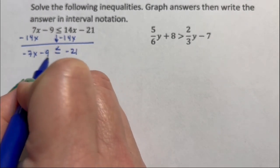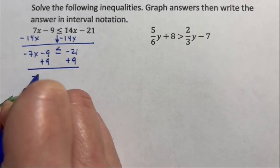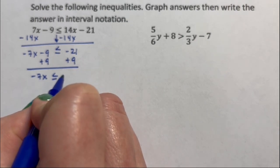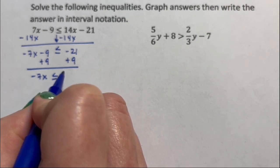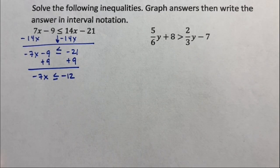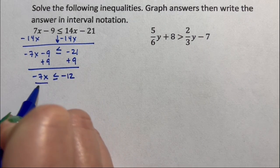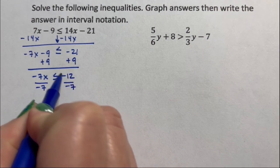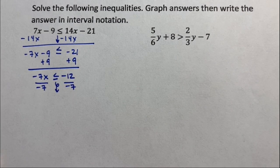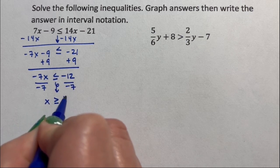So I have negative 7x minus 9 is less than or equal to negative 21. I am going to add this 9 over. I'm going to get negative 7x is less than or equal to negative 12. When I divide both sides by negative 7, because I'm dividing by a negative, this inequality sign has to flip over so that I have x is greater than or equal to 12 over 7.